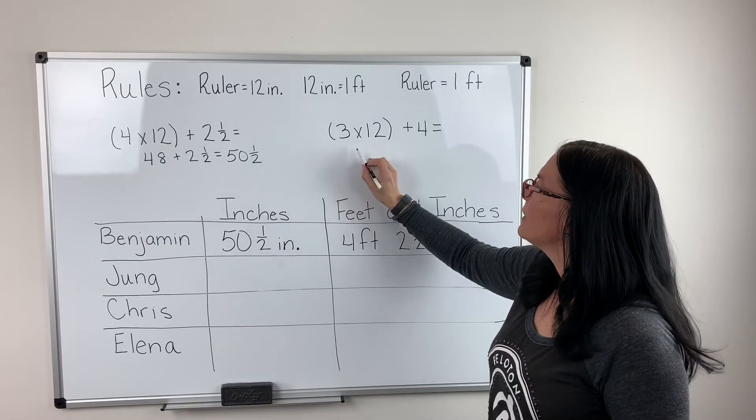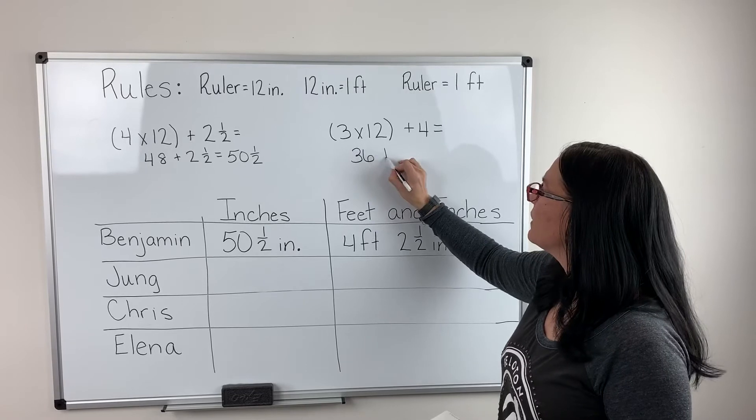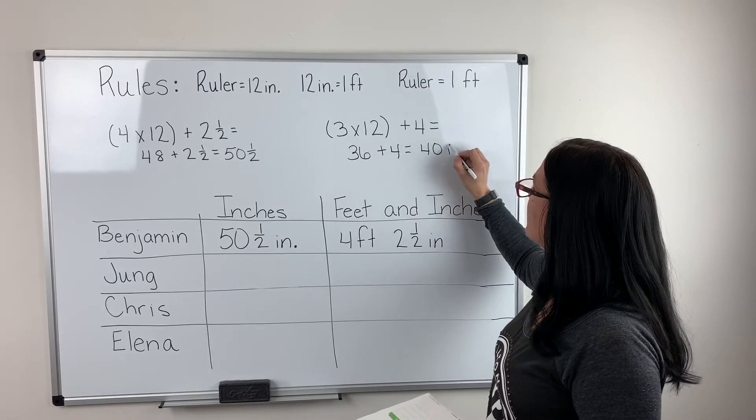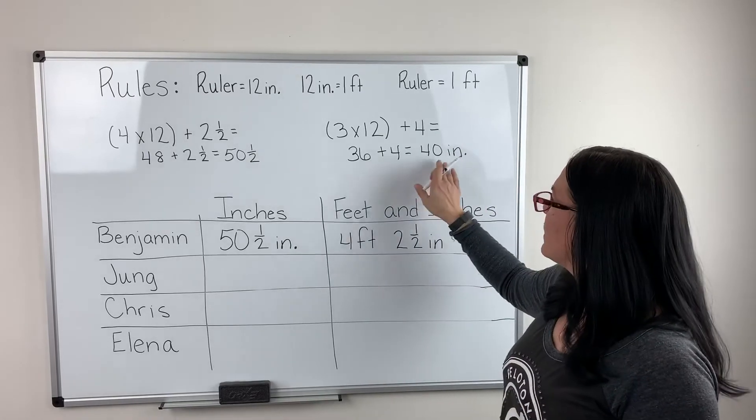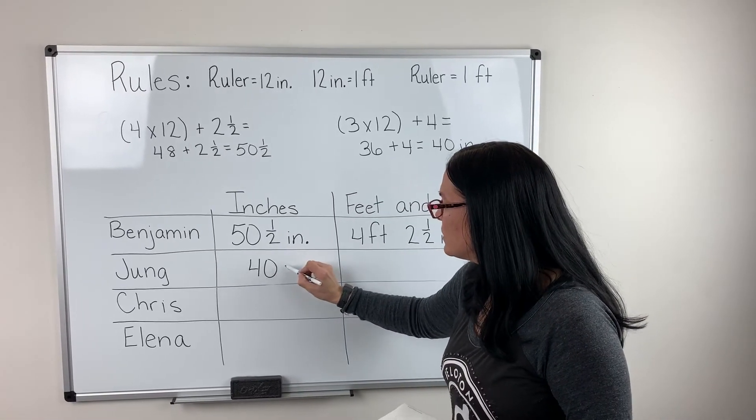Three times 12 is 36. I'm going to add my four more inches. I get 40. So I know that Jung jumped 40 inches.